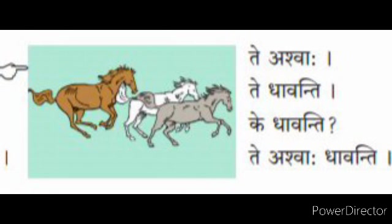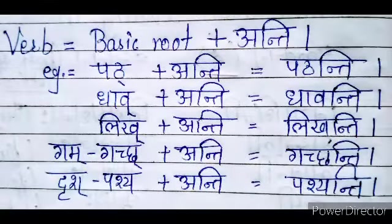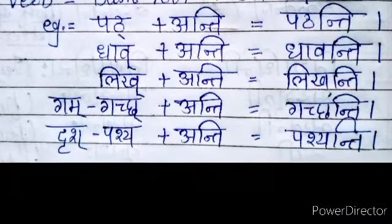Ke dhavanti? — Who are running? Te ashwaha dhavanti — those horses are running. Remember, for Pullingi, we use ke instead of ete or te, and we use the anti suffix for the verb. Like: patha + anti = pathanti; dhava + anti = dhavanti.